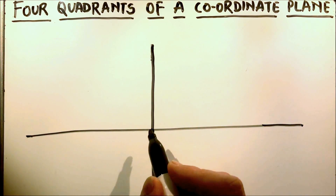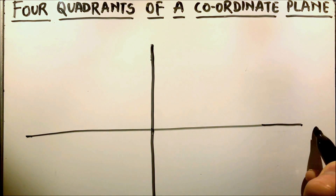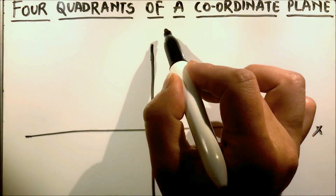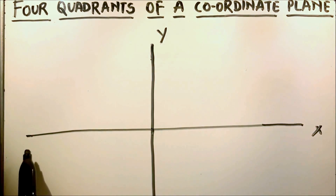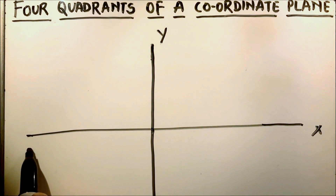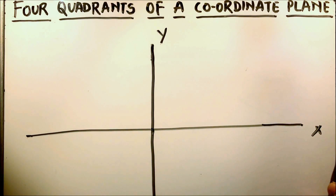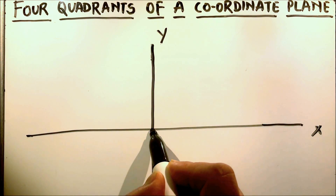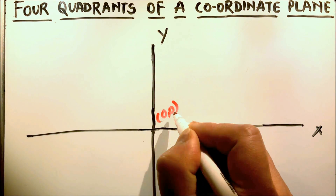So, this is a coordinate plane. This is the x-axis and this is the y-axis. As this is a number line, this is the origin, 0, 0.